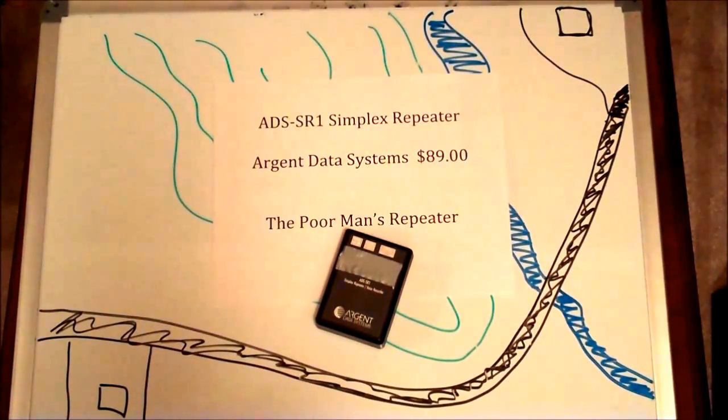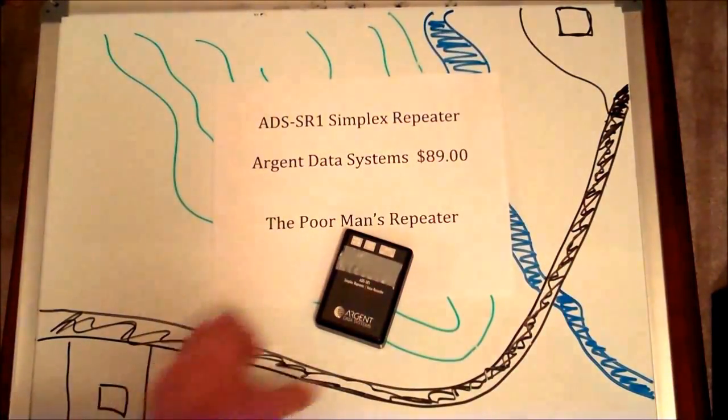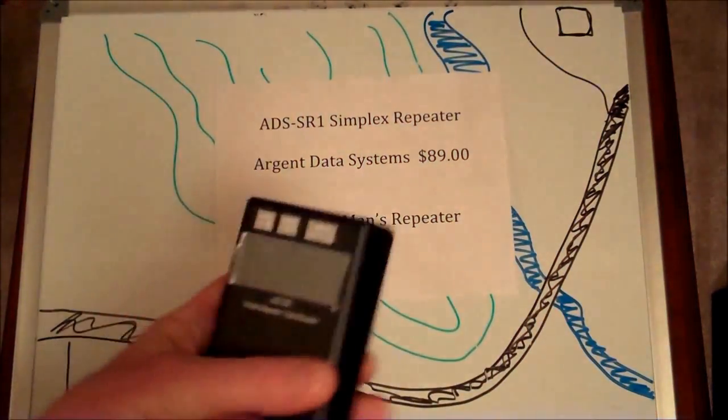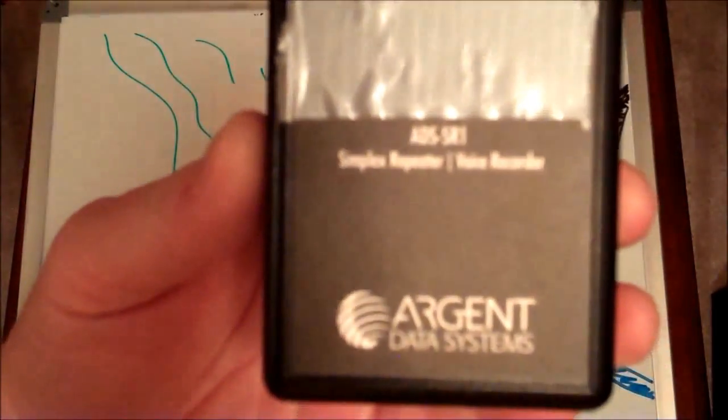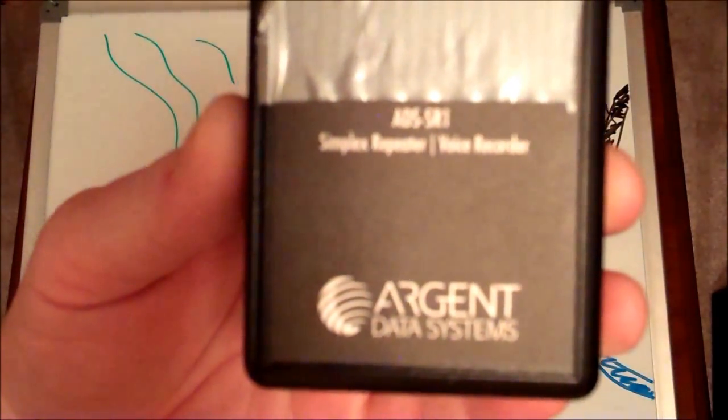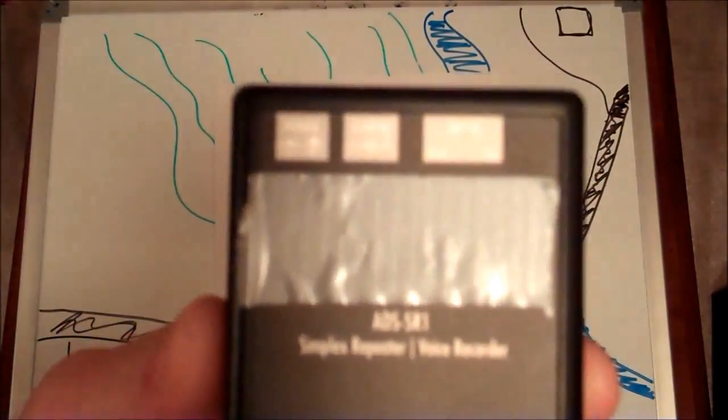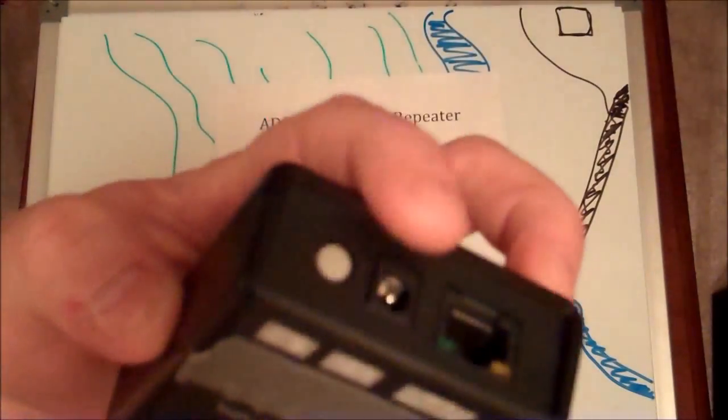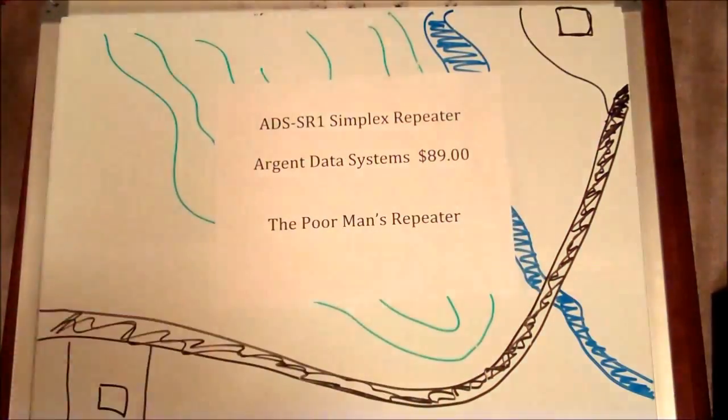I'll show you here - it's called the ADS SR1 by Argent Data Systems. 89 bucks, you can buy them online. I think the company's out of California. I'll post a link below.